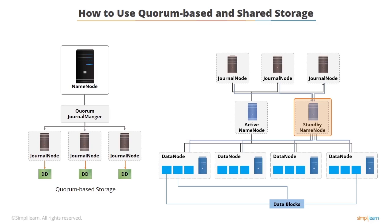The standby node reads the edits from the journal nodes and constantly watches for changes to the edit log. As the standby node sees the edits, it applies them to its own namespace. In the event of a failover, the standby ensures it has read all the edits from the journal nodes before promoting itself to the active state, ensuring the namespace state is fully synchronized.